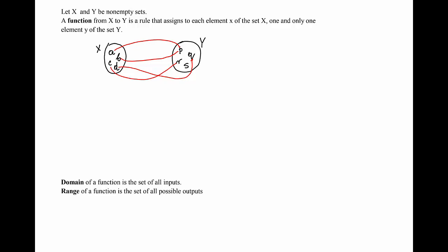Now I can enter a generic element x in the set x and a generic element y in the set y and assign to that x the value y. The elements of the set x are often called inputs. So in this case the inputs are the elements a, b, c, d and x. The elements of the set y associated with some element of x are called the outputs. So the outputs here are p, r, q and y.